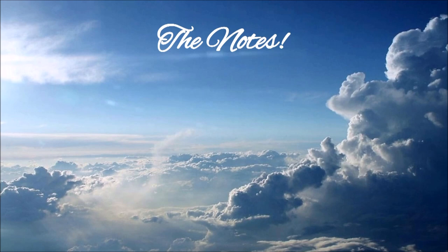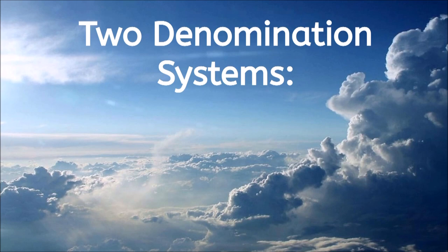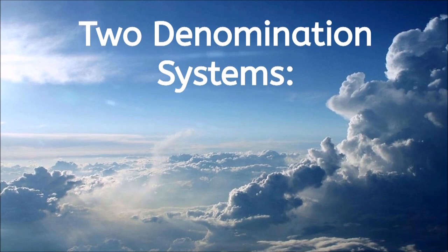Inside the pentagram, there are symbols that we call notes. In traditional music theory, the basic notes are seven, ordered by eighth, following the lowest to the highest. There are two denomination systems for the notes: solmization and the alphabet. The first is widely used in countries like Italy, while the second is used in Anglo-Saxon countries.